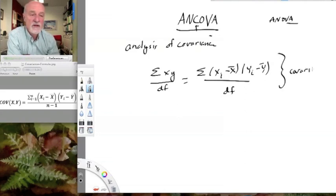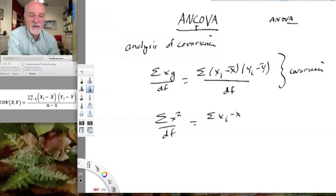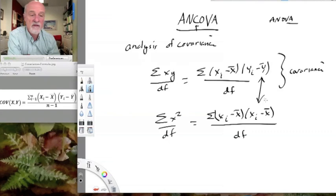This should look to you a lot like a variance. Because a variance is what? The summation of the squared deviations of x from its mean, quantity squared. Let's write it on out instead of just putting a squared sign. And you can see that these are very similar.